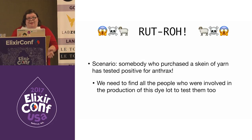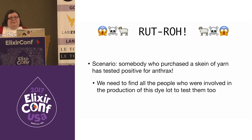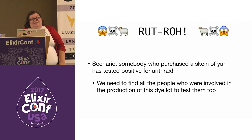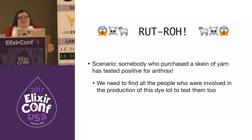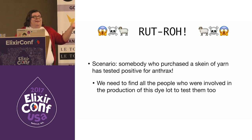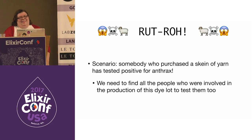But we have a big problem. Somebody who knitted a skein of our yarn has tested positive for anthrax. Anthrax is an infection caused by a bacterium spread by contact with the spores of bacillus anthracis, and it primarily occurs with people who work with livestock and livestock products like our wool. So we need to find all the people involved in the production of this yarn and test all of them too.